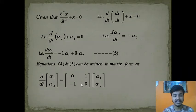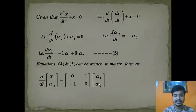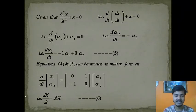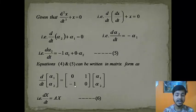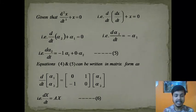If we denote the vector [α₁, α₂] as X, this coefficient matrix as A, then this system can be written as dX/dt = AX. This is equation 6 and the matrix form of the given equation.